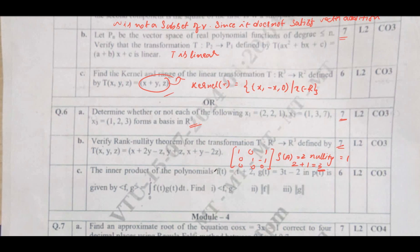Find the inner product of polynomials f(t) and g(t) as given. The inner product of f and g is −1. The norm of f is √(19/3) and the norm of g is 1. This is the solution for question number 6c.